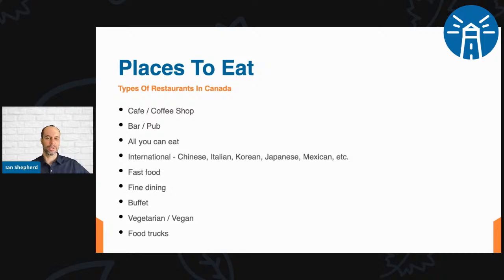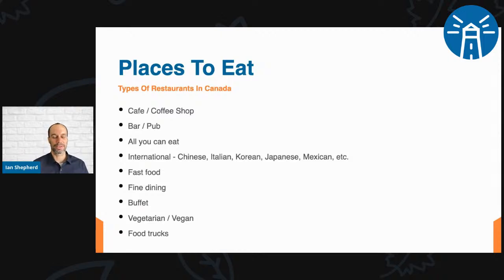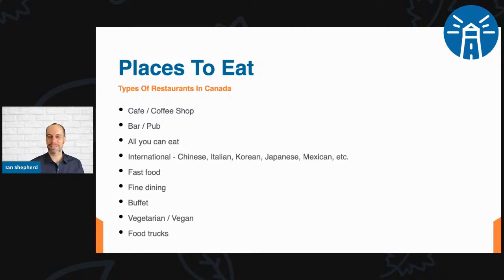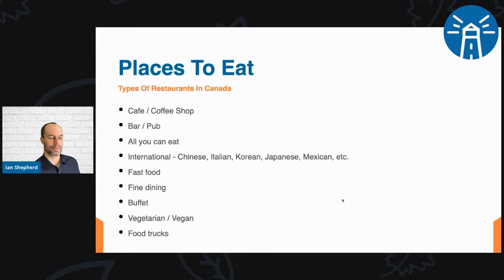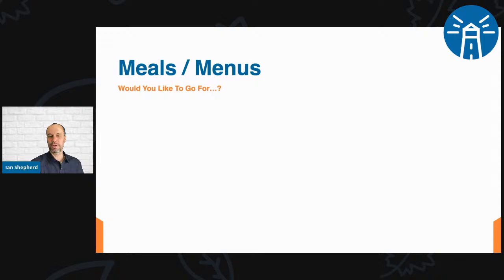Of these restaurant types, what do you like? Do you like bars, Chinese food, fine dining, or all-you-can-eat restaurants? My personal favorite is all-you-can-eat — I like to not eat for a while and then eat all the food I can to get my money's worth. I also enjoy different international cuisines like Chinese and Japanese. Let's move on and talk about meals — the different parts of the menu when you go out to eat.